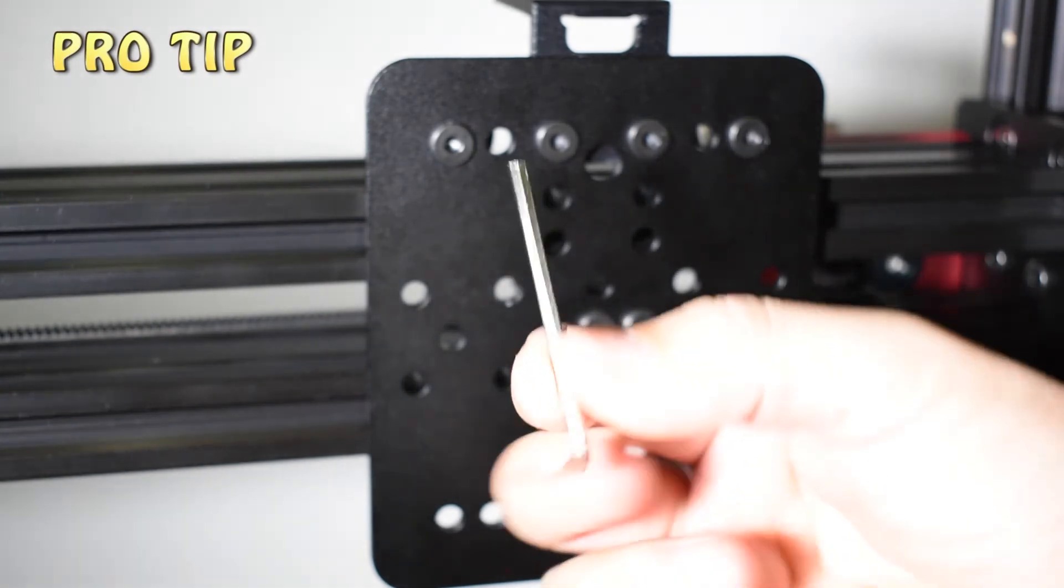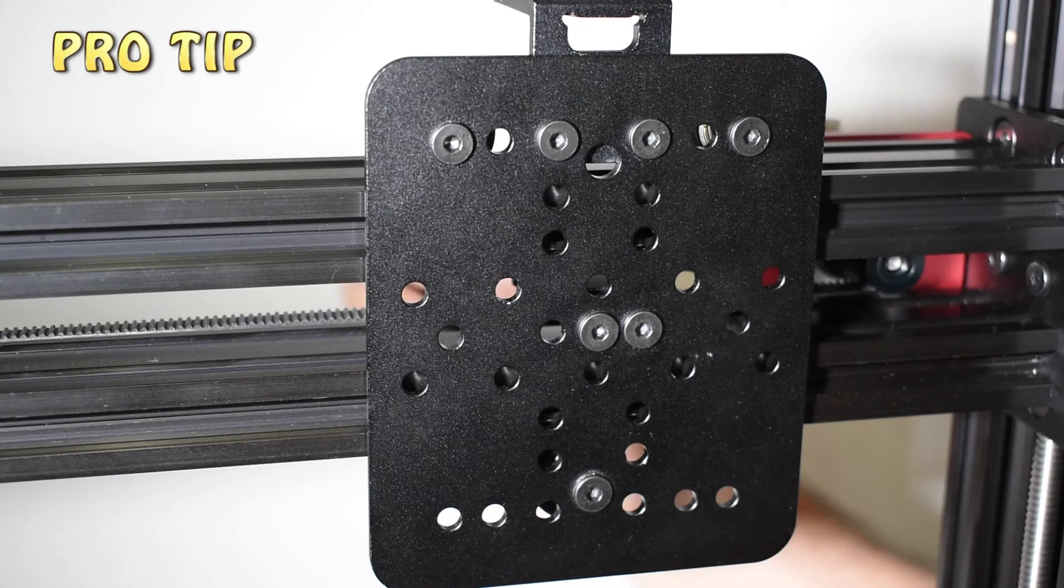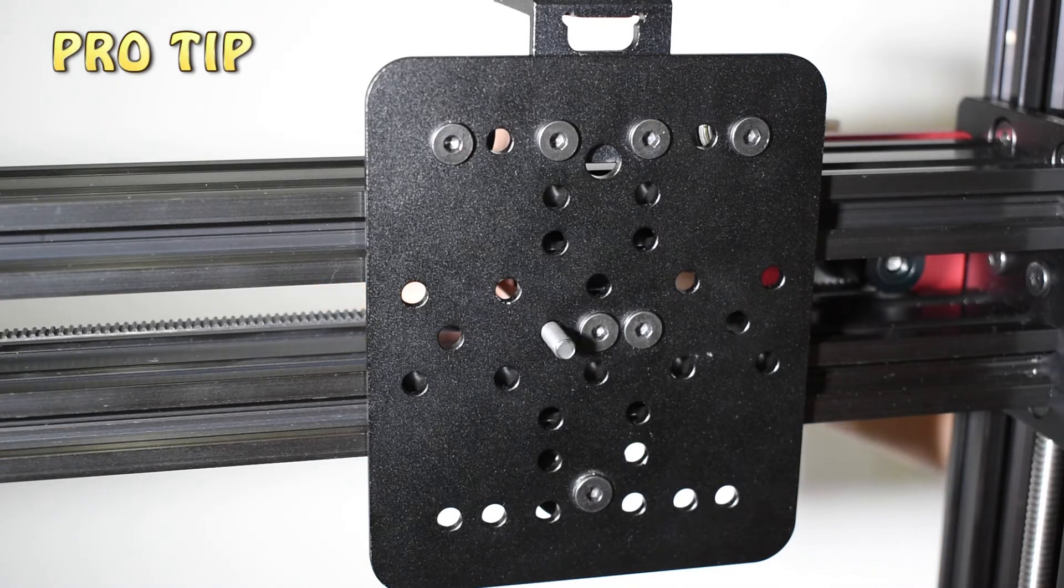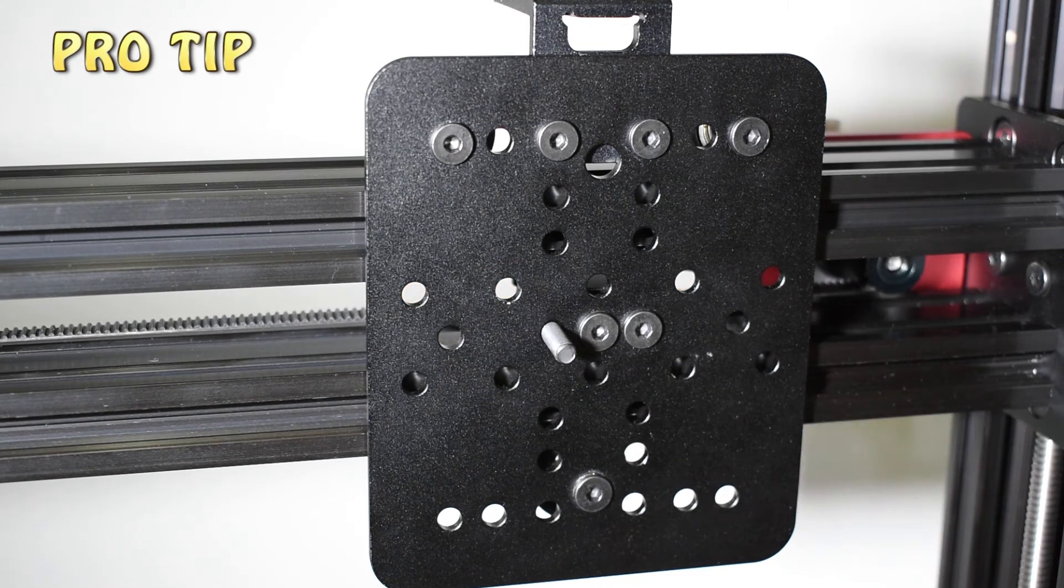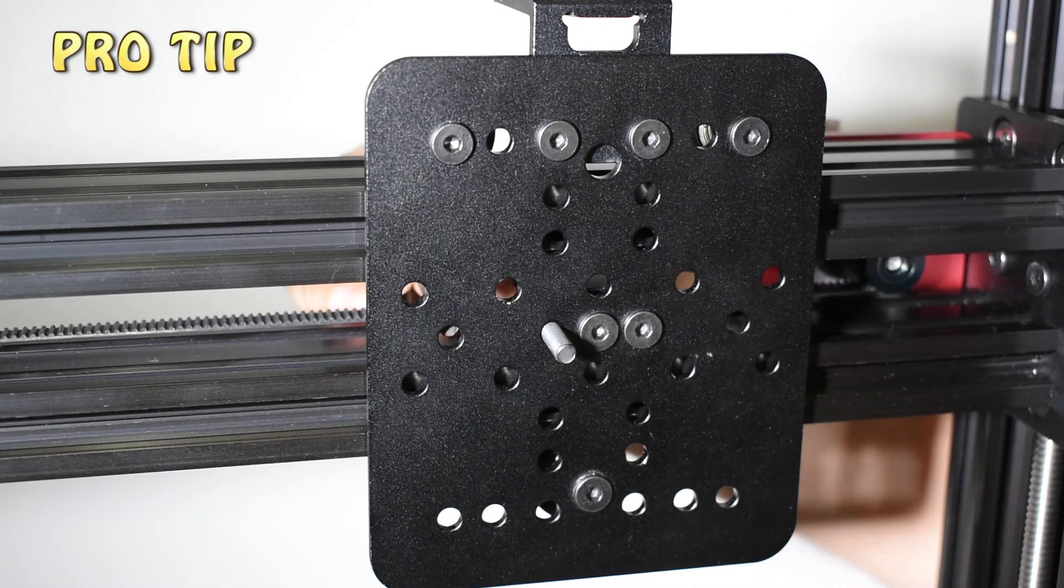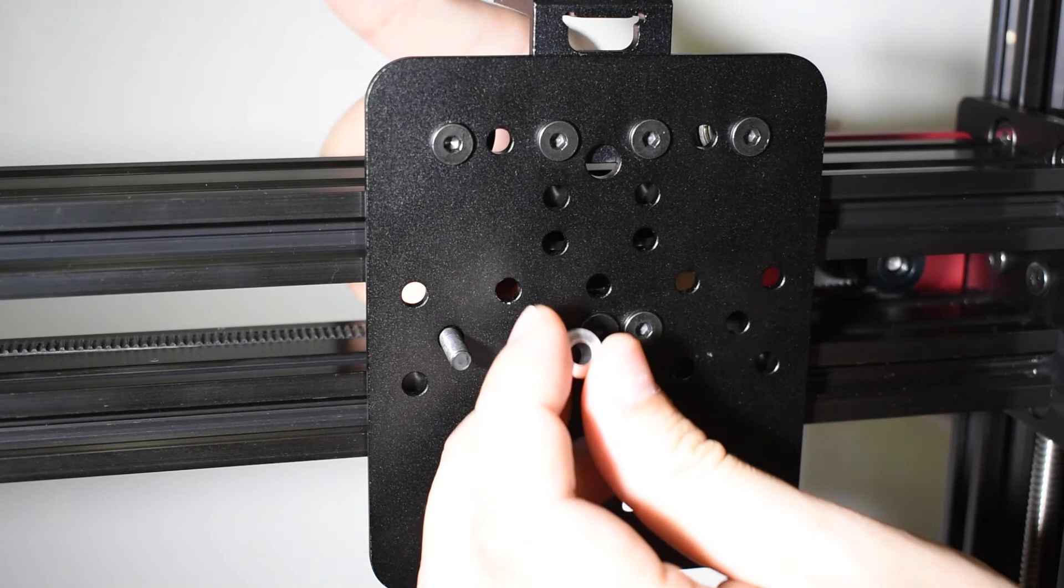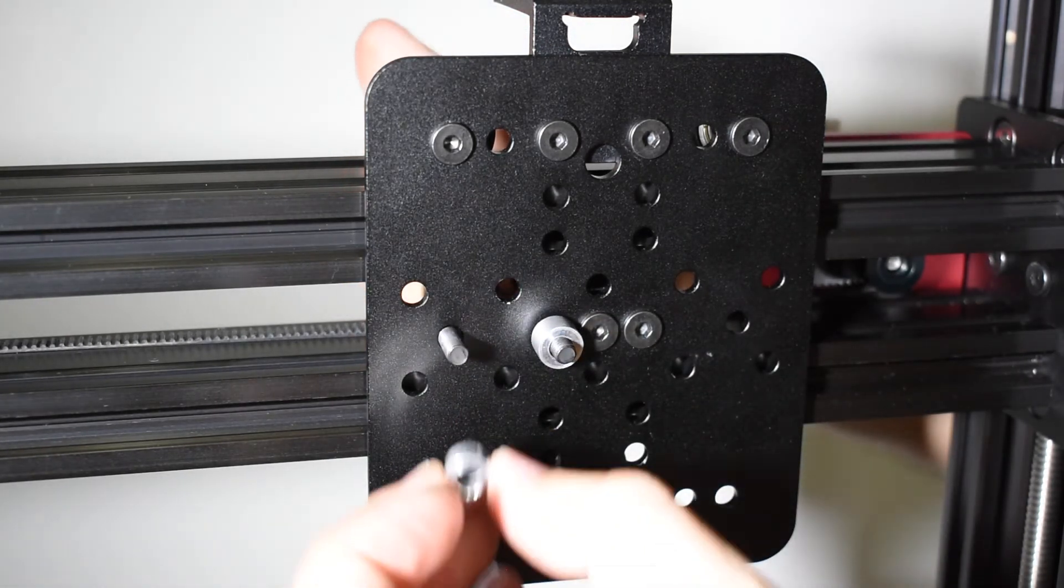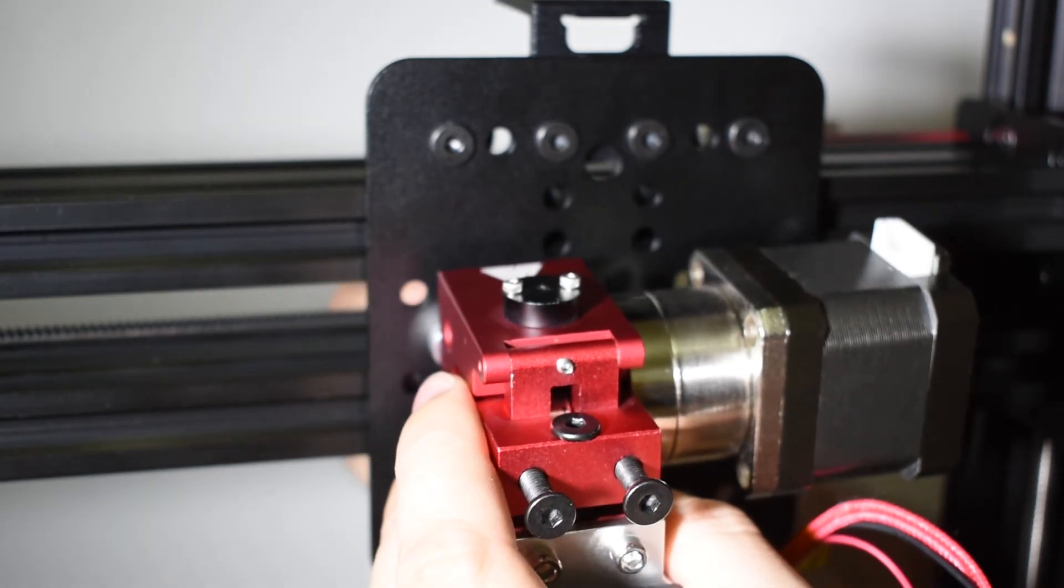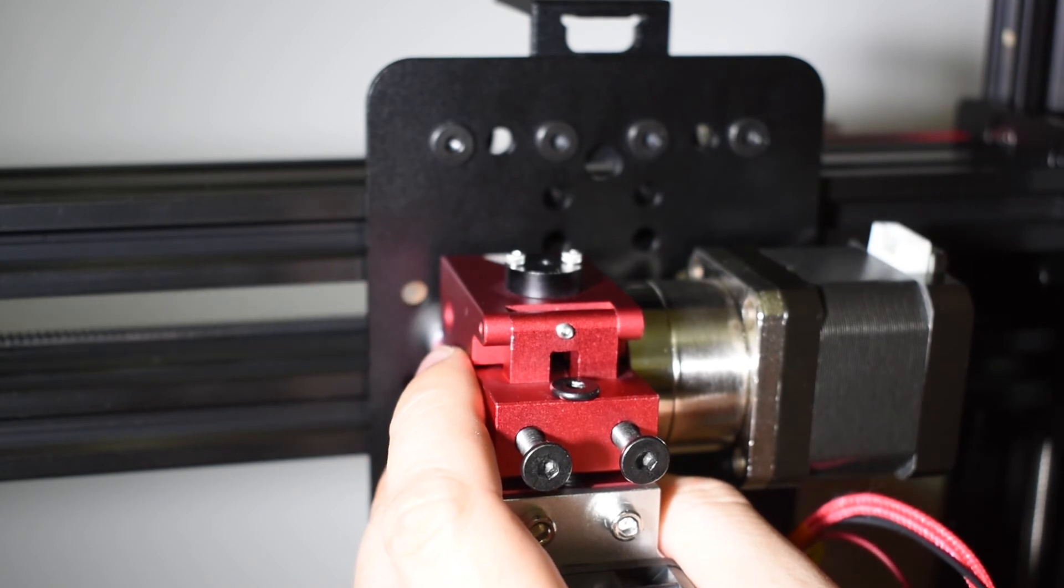Last but not least, let's install everything in the X carriage. My advice is to use the flat tip allen key and put the screw on it. This will help to put the screw in place. Don't forget to put the spacers. Make sure you secure the extruder parallel with the X carriage.